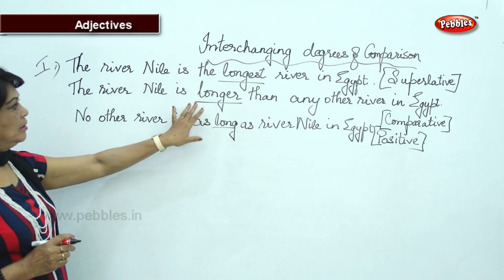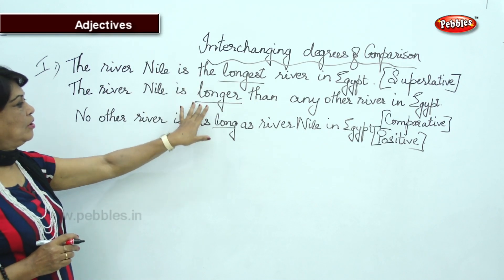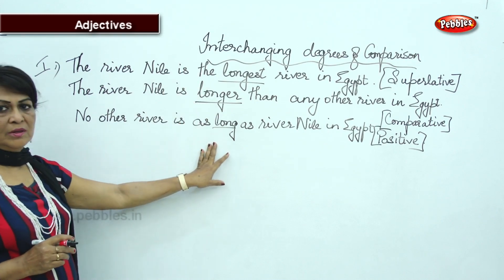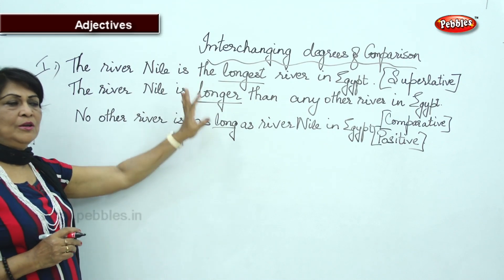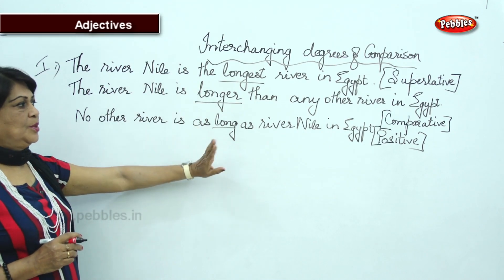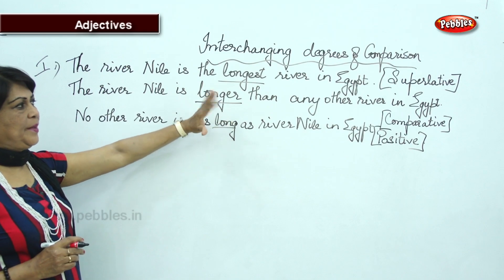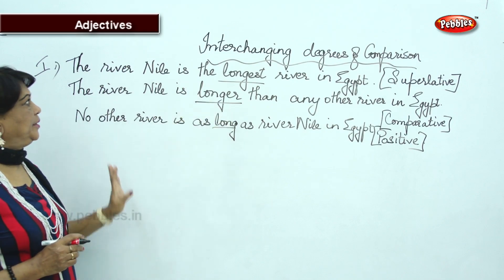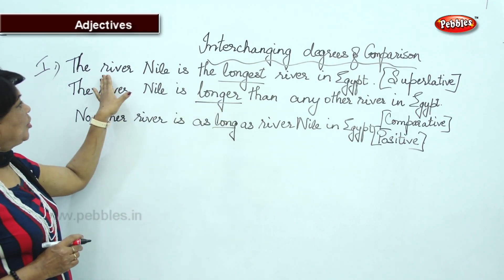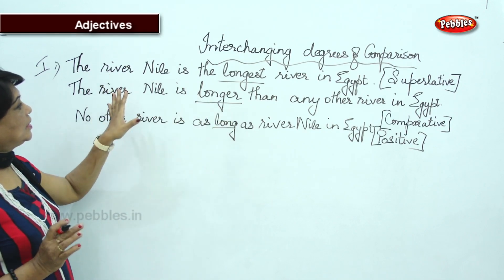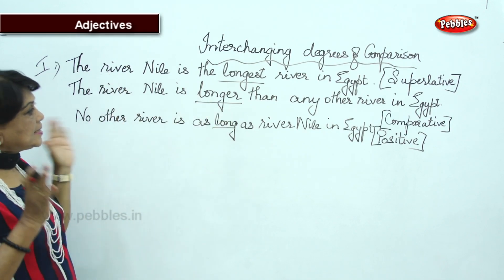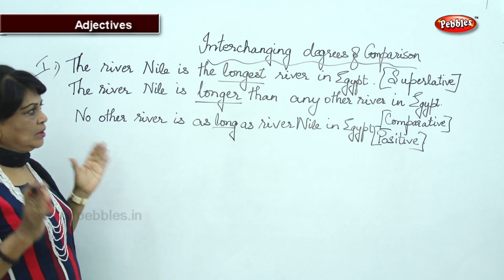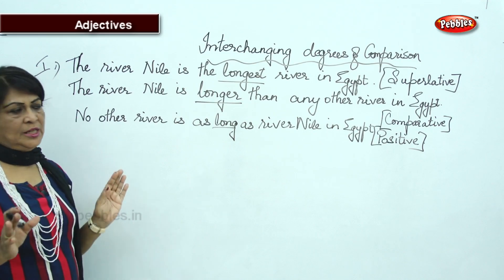So: long — longer — longest. Positive, comparative, superlative. It is because the river Nile is the longest river in Egypt that you use this format.